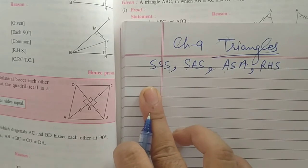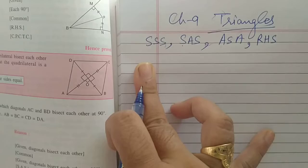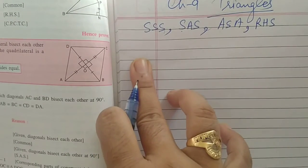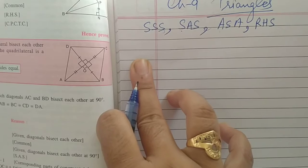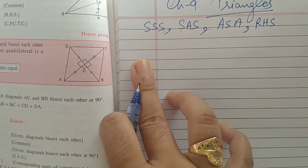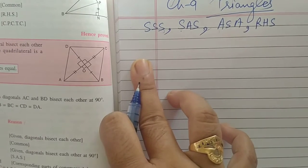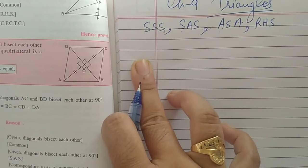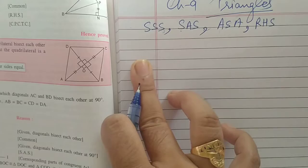Here I am going to solve one example for you. How to solve the question, how we will write, how we will prove. So, here question is, if the diagonals of a quadrilateral bisect each other at a right angle, then prove that the quadrilateral is a rhombus.